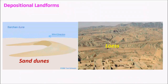Coming to depositional landforms, sand dunes and loess are the important ones. Sand dunes are mostly found in intense desert landforms like the Sahara and Thar. Loess is found in semi-desert to arid landforms and consists of sedimentary deposits found mostly in the Gobi Desert.